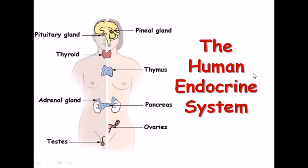Hello guys, this is the basics of biology tutorial, Unit 8. In this unit we are going to talk about the physiology of humans and the basic view of human physiology — the different systems. In this video we'll be talking about the human endocrine system in a very simple scale.